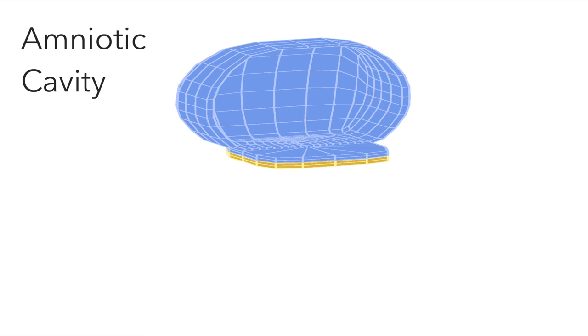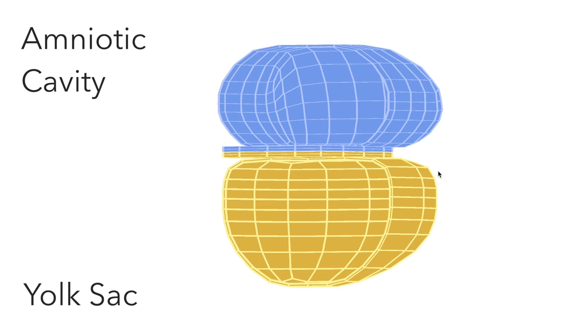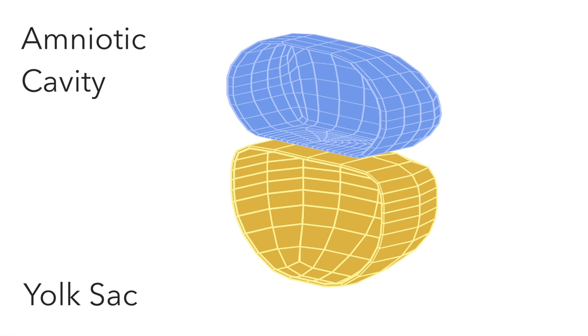The epiblast develops an internal cavity which is the amniotic cavity. To avoid over-complicating things, the yolk sac is a space that sits beneath the hypoblast. The parts of the embryo in between will be represented by this simple blue object here.